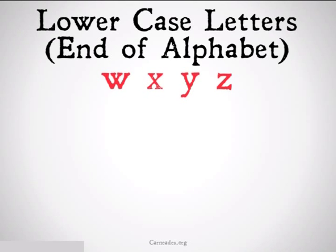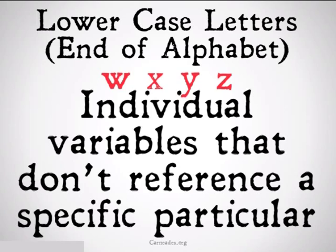We will also be using lowercase letters from the end of the alphabet. These are going to be set aside to probably the last four or five letters in the alphabet, typically W, X, Y, and Z, because it's unlikely that you need more than that many variables in a statement. These are individual variables that don't reference a specific particular. These variables could be any of those particulars. W could represent anything from Bill Clinton to the Rio Grande.